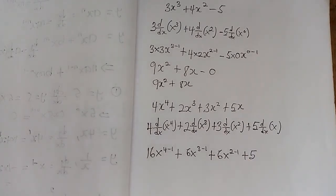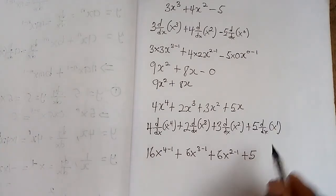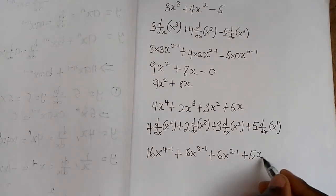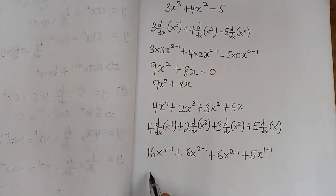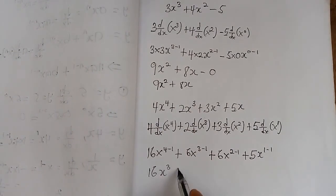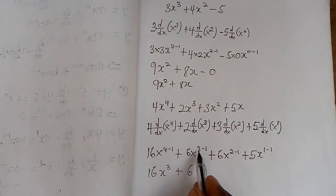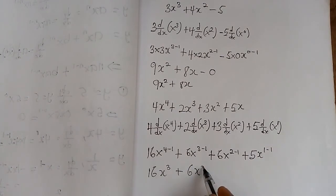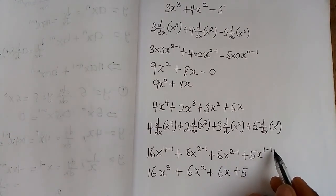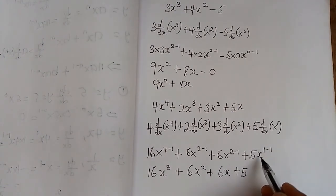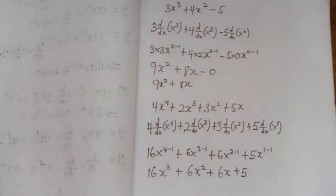For 5x: the exponent is 1, so 1 multiplies 5 giving 5, and x^(1-1) = x^0. So 4 - 1 = 3 gives us 16x³, plus 3 - 1 = 2 gives us 6x², plus 2 - 1 = 1 gives us 6x, plus x^0 = 1 so 1 times 5 = 5. The final answer is dy/dx = 16x³ + 6x² + 6x + 5.